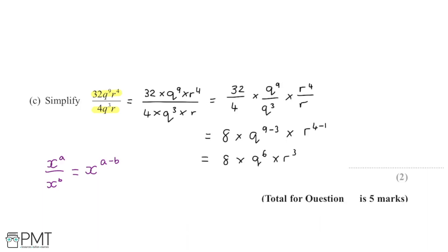Because we're multiplying these together, we can write them out next to each other. The final answer is 8 q to the 6 r cubed. We would get one mark for getting two of these terms right, and the second mark for the fully correct answer.